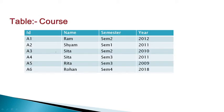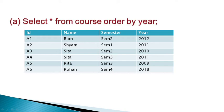Let us create a sample table with columns a1, a2, a3, a4, a5, a6 representing id, name, semester, and year. The first option is: SELECT * FROM course ORDER BY year. We need to sort the table by year.